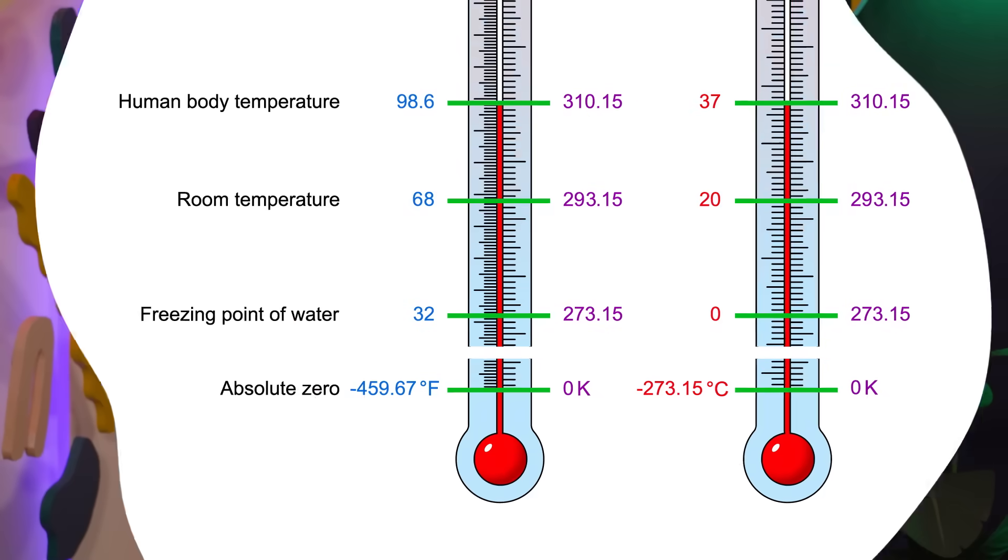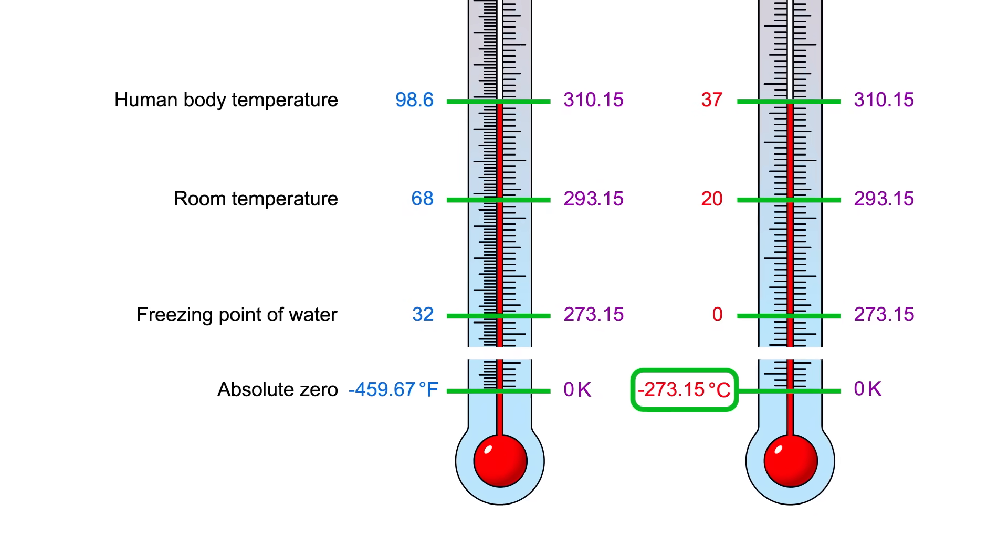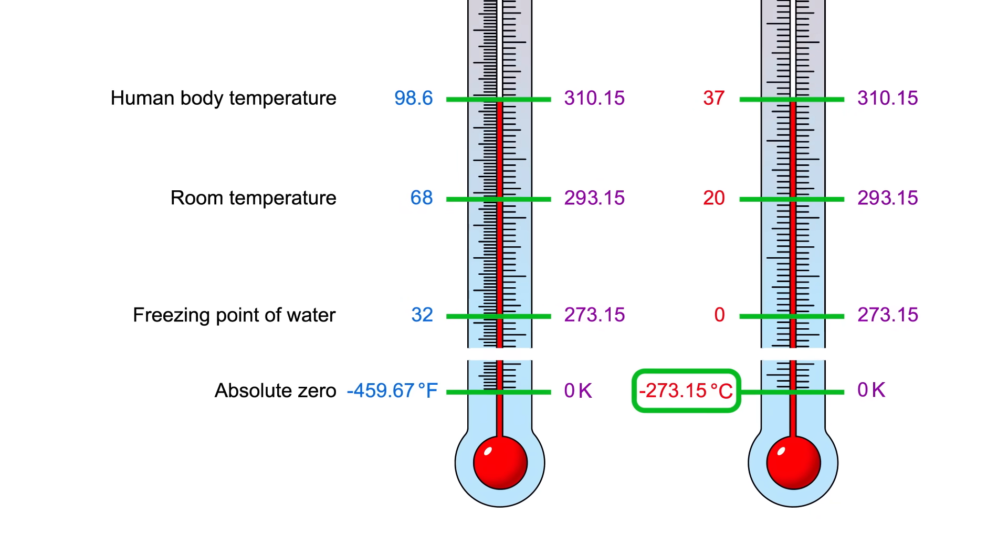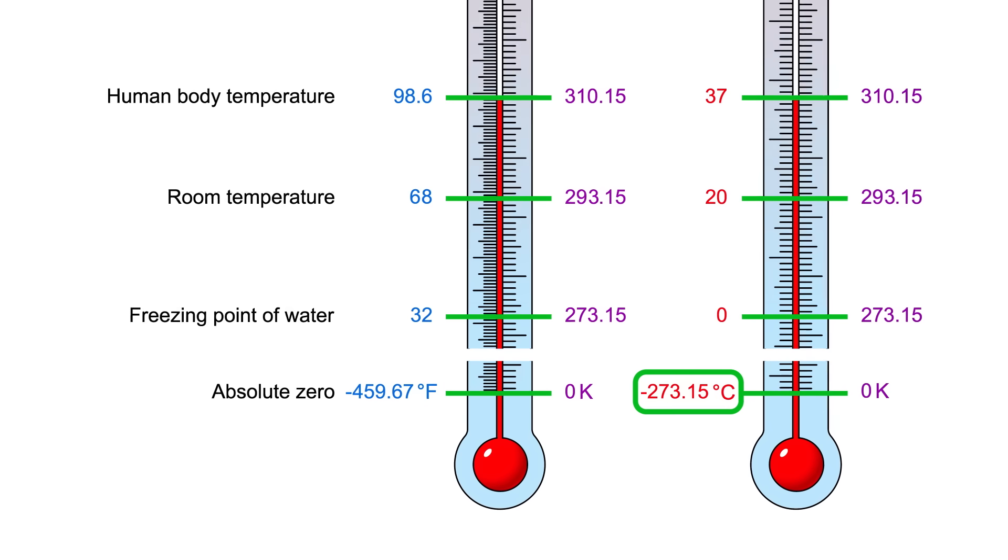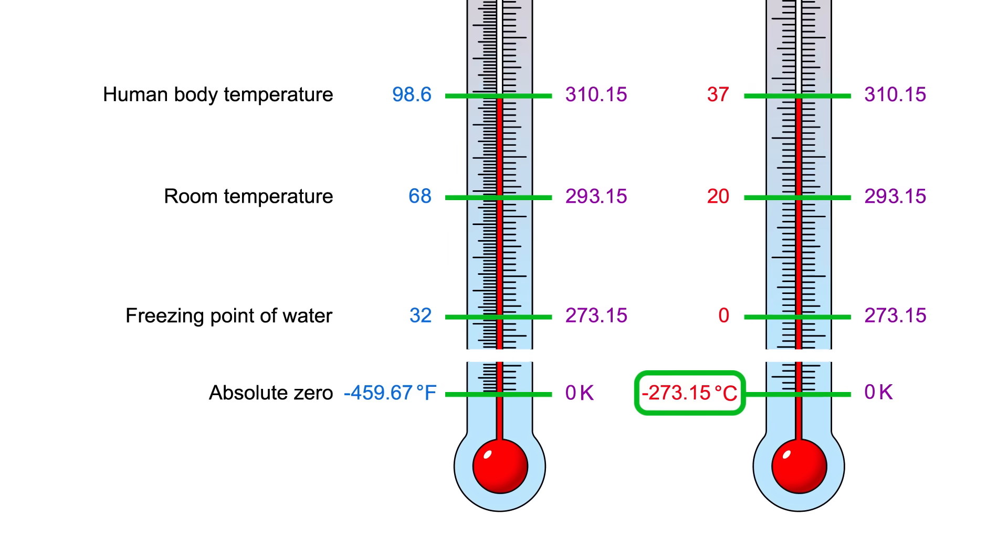You may have heard that temperature has an absolute minimum, a point where you can go no colder. And it's true, temperatures colder than negative 273.15 degrees Celsius, which is the same as zero Kelvin, are impossible. That's why it's called absolute zero.